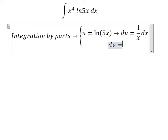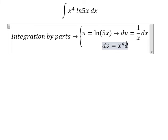dv, that's x to the power of 4 dx. So if we do this integration, you got v equals to x to the power of 5 over 5.